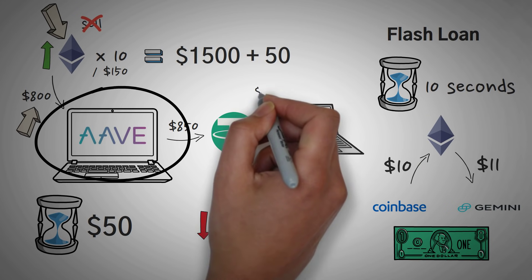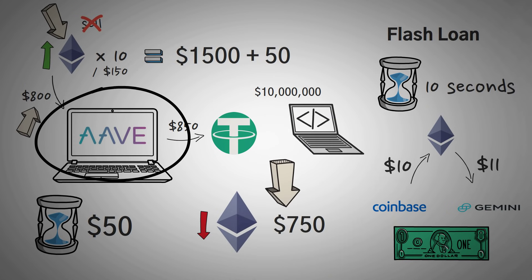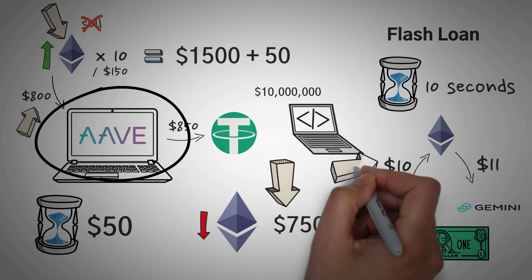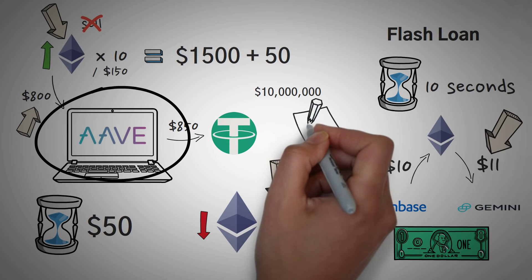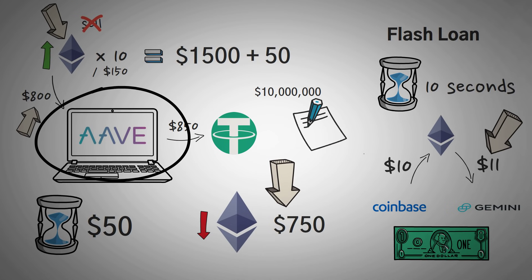And so you can use what we call is a flash loan to literally borrow millions of dollars. You don't have to put any money down. You just write a flash loan to borrow $10 million, you tell it to go buy Ethereum for $10, and then immediately sell it for $11, and then you pay back the original loan, $10 million.